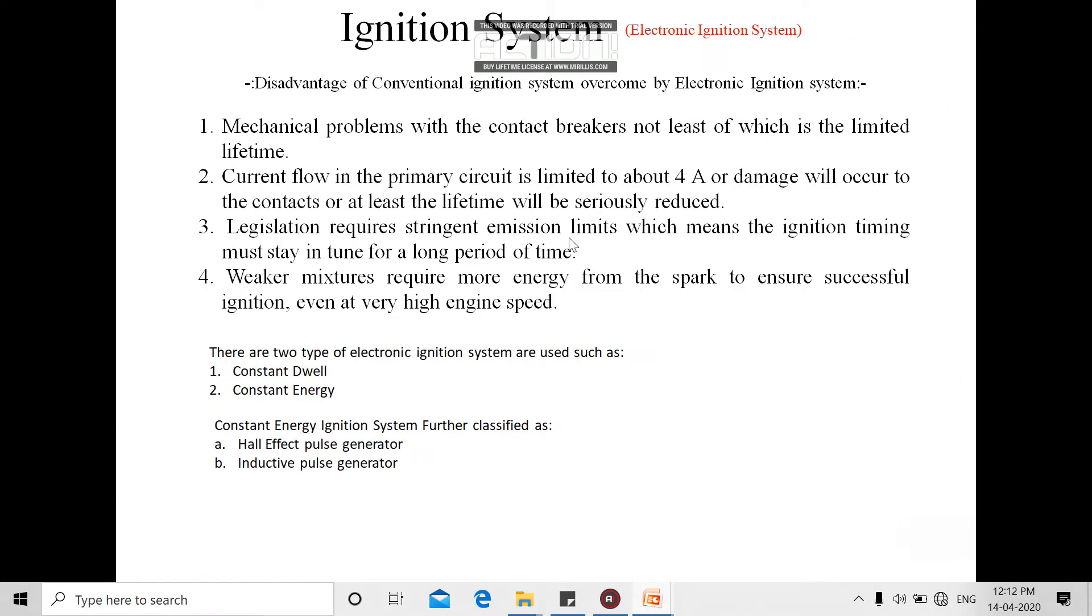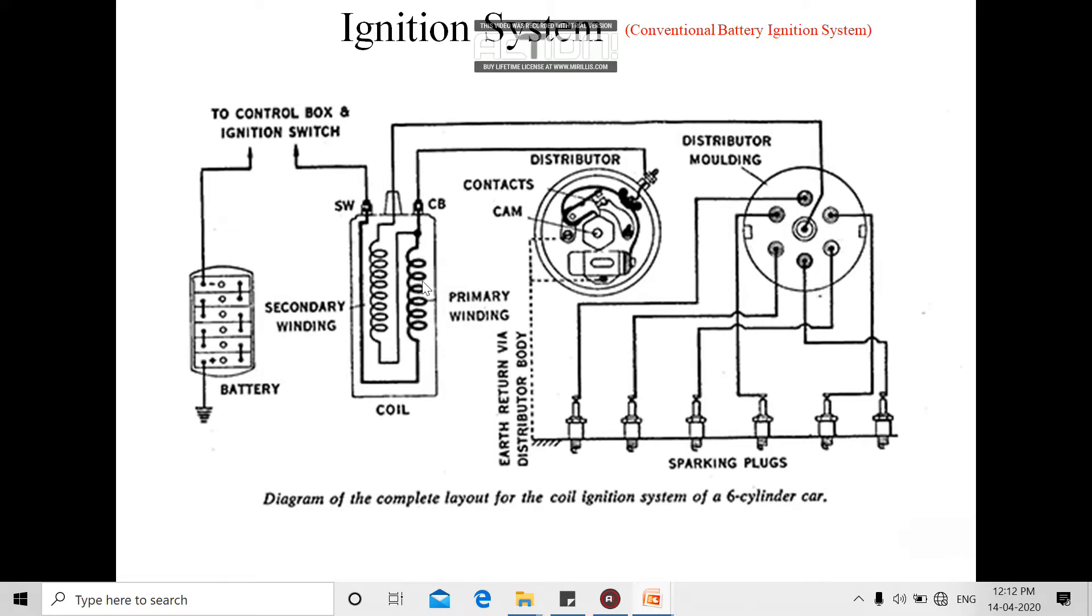So the current is entering here through the primary winding. This is your capacitor here. A wire coming from the primary winding is split into two ends.